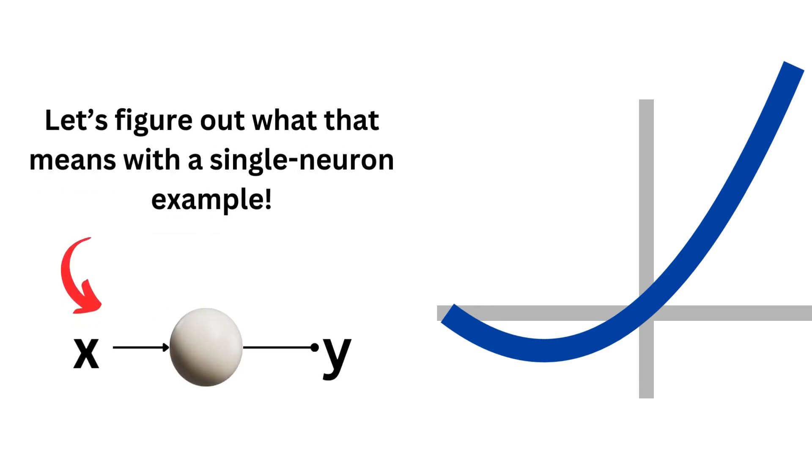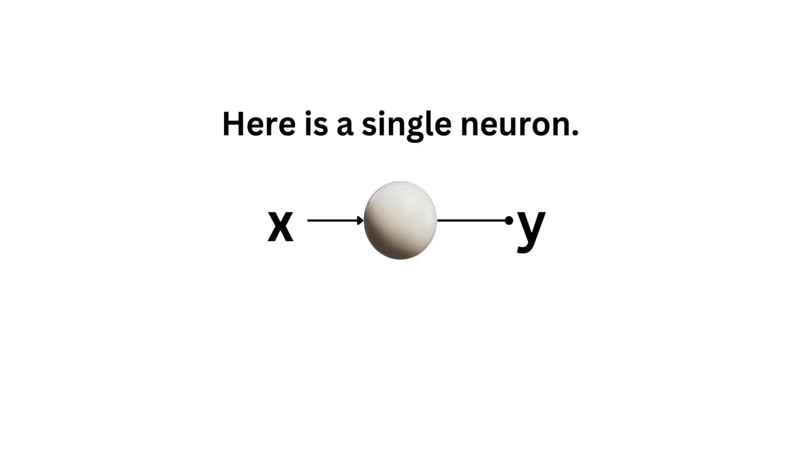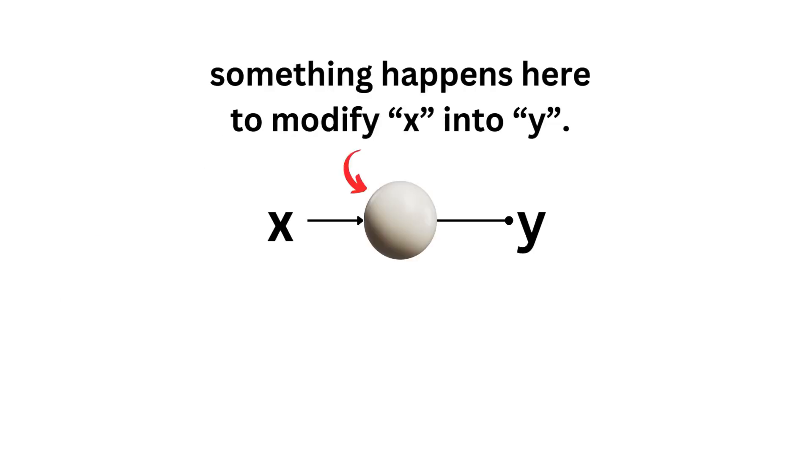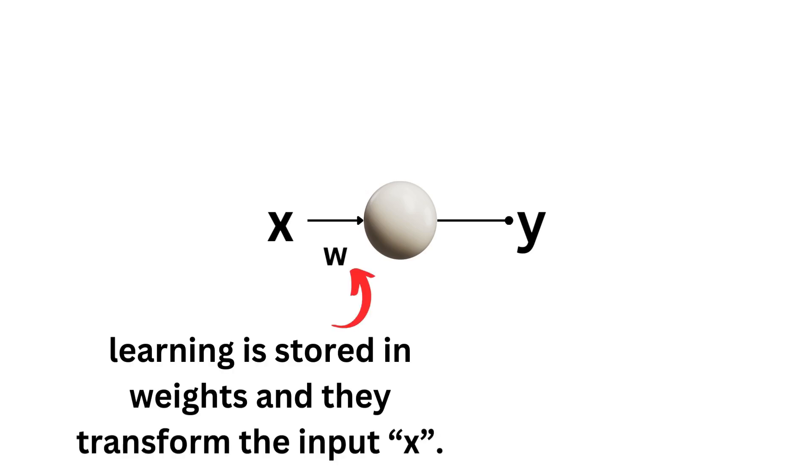Let's figure out what that means with a single neuron example. So here's a single neuron. Something happened in here to modify x into y. Learning is stored in weights and the transformed input x.